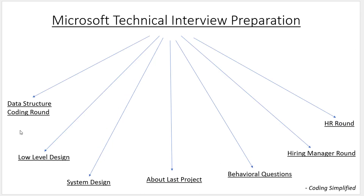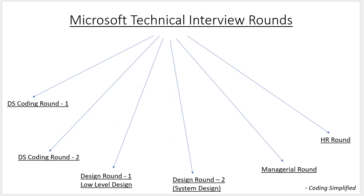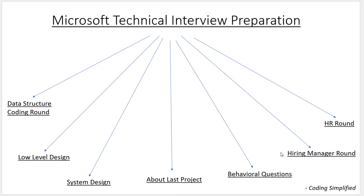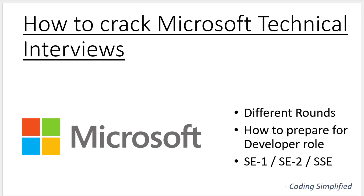One final tip: after each round, when the interviewer asks if you have questions, you can ask things like which team you'll be on, what your role will involve, which technology or business unit you'll work in. This leaves a good impression. If you have any doubts, write in the comments. Please like the video and subscribe for more such content. Thank you!